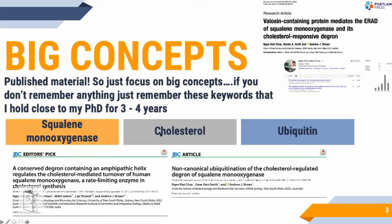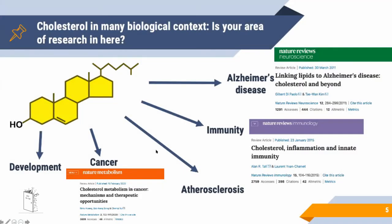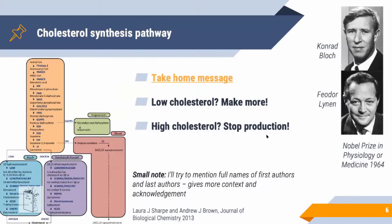The key terms to remember are protein quality control, squalene monooxygenase, and cholesterol. Let's first talk about how cells make cholesterol and how they know when to stop. Cholesterol is an important lipid involved in a lot of research areas, so chances are your work is related to it too. This field has a rich history with Nobel laureates making amazing discoveries, one of which is the cholesterol synthesis pathway.